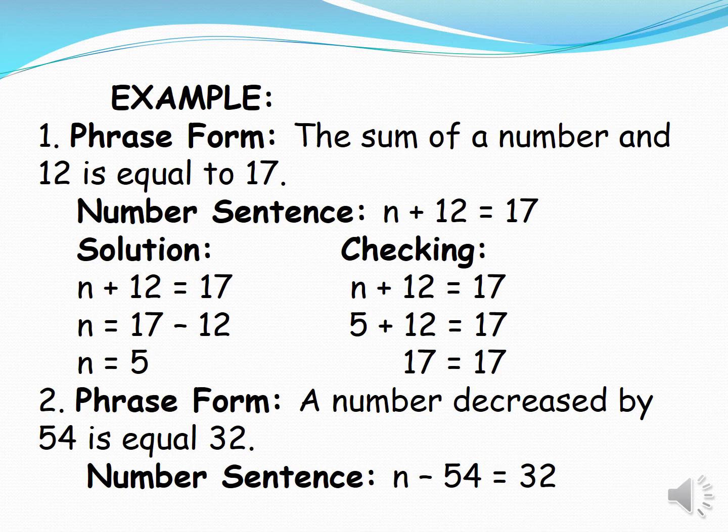Checking, we have n plus 12 is equal to 17. Substitute n by its value in our answer, we have 5. So 5 plus 12 is equal to 17. 17 is equal to 17. So the answer 5 is correct.